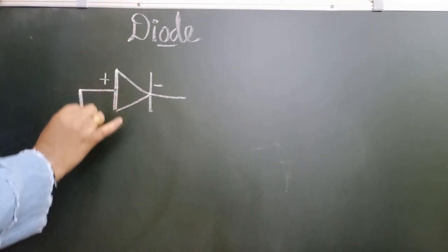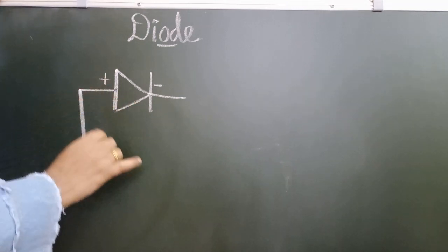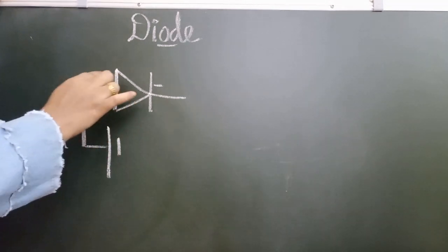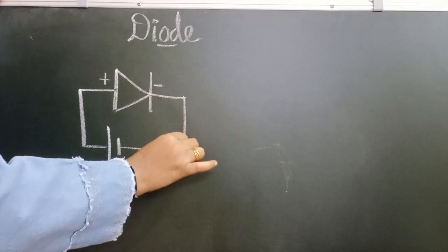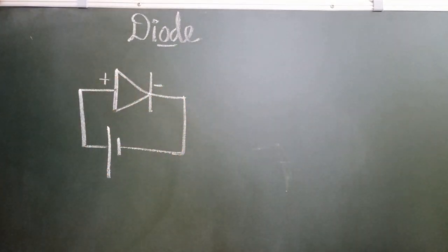...in this way: the positive terminal of the battery is connected to the positive end of the diode, and the negative terminal of the battery is connected to the negative terminal of the diode, so that it is in forward bias.